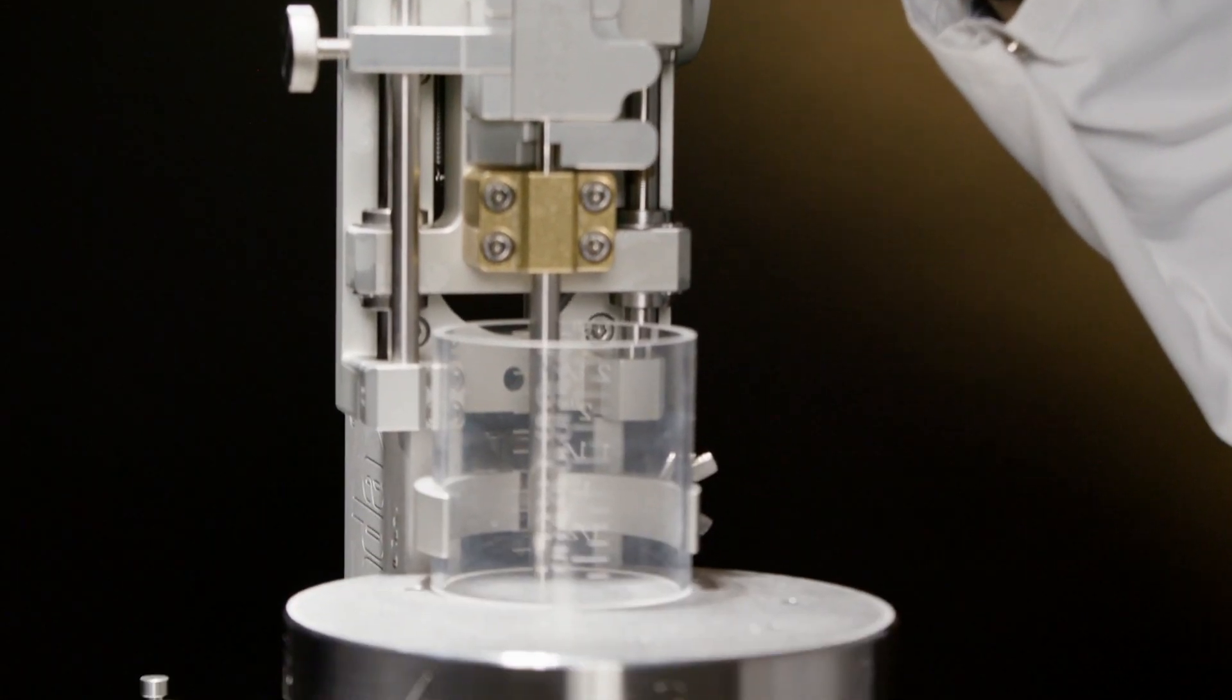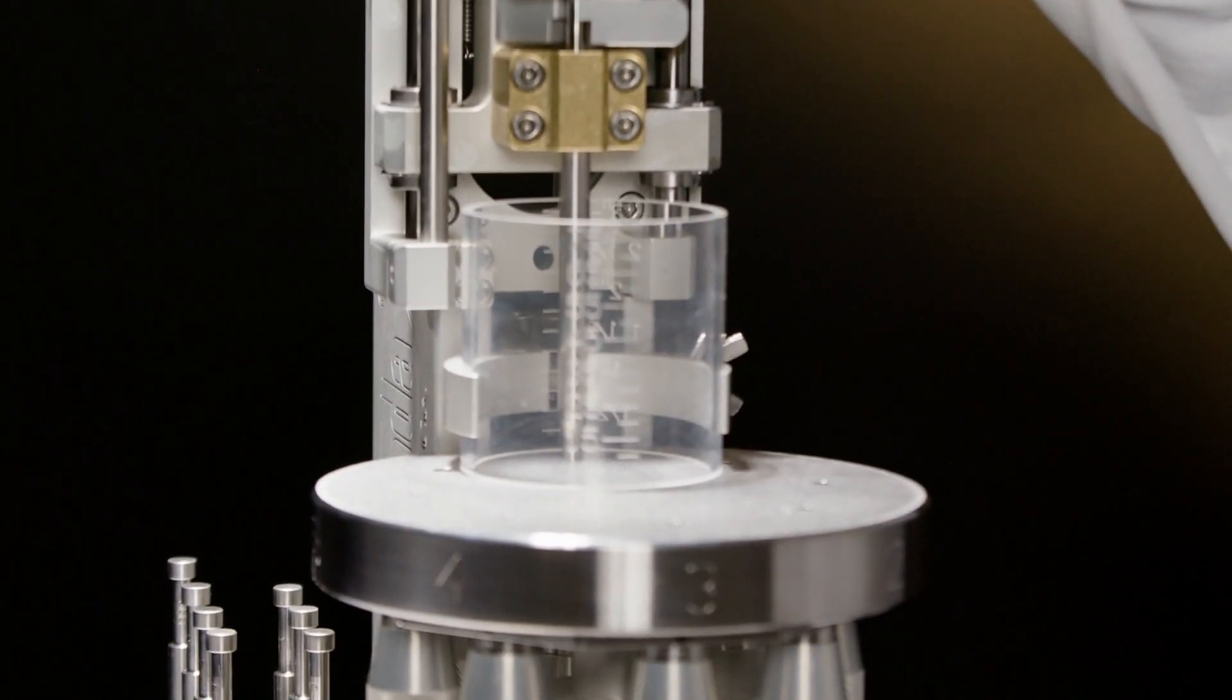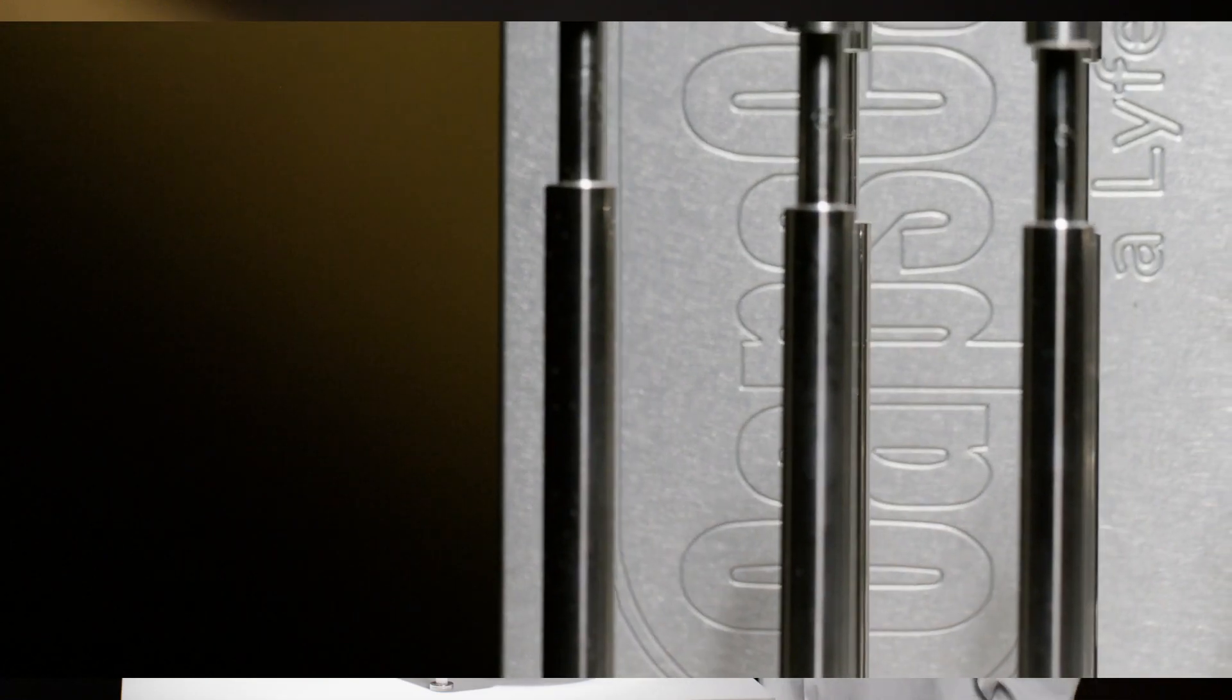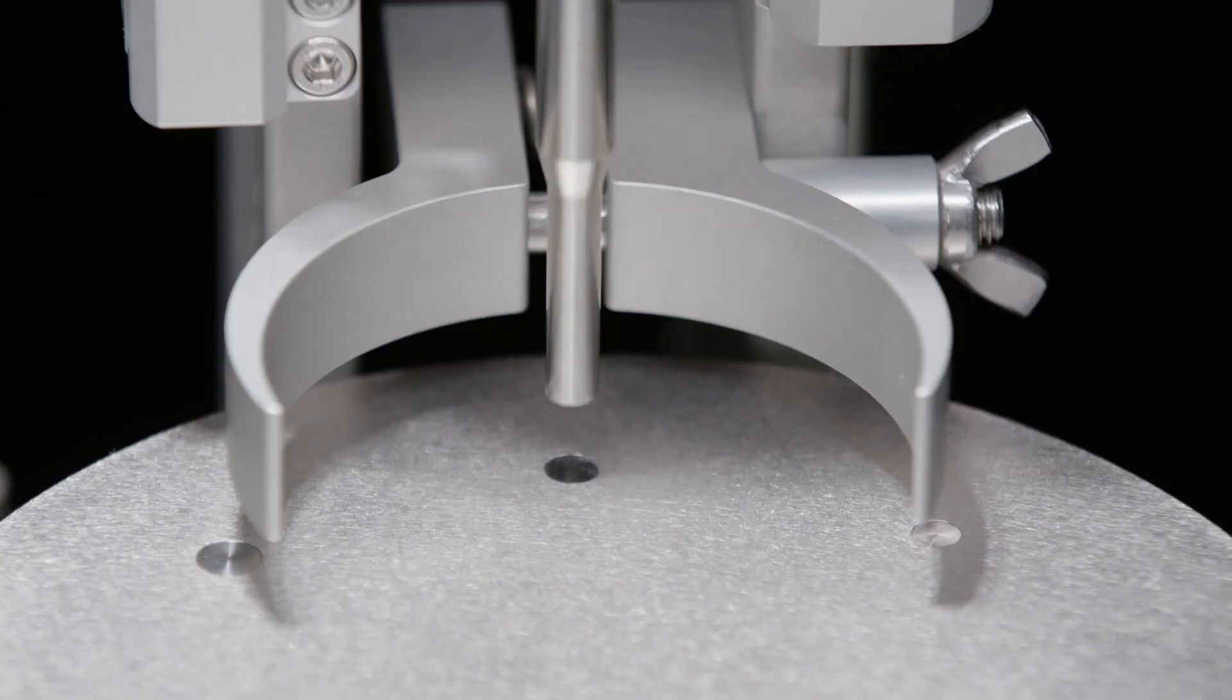A tamping spring scale measures how much spring compression you are using and includes markings for recommended maximum compression limits. This can prevent costly damage to your filling machine because of over compression.